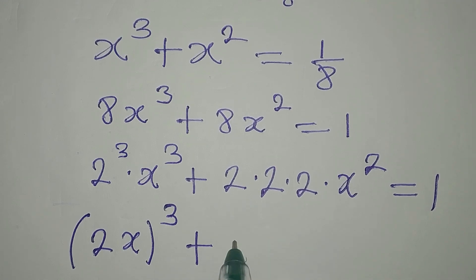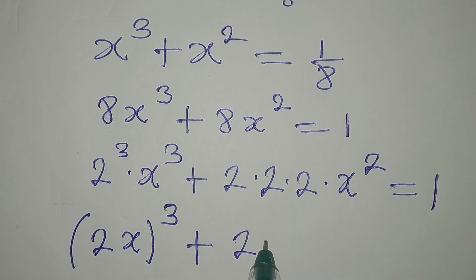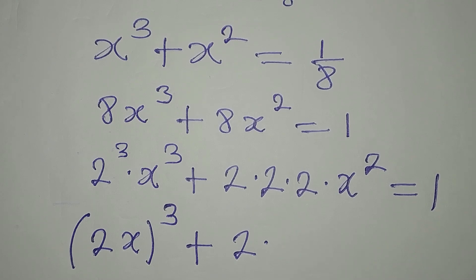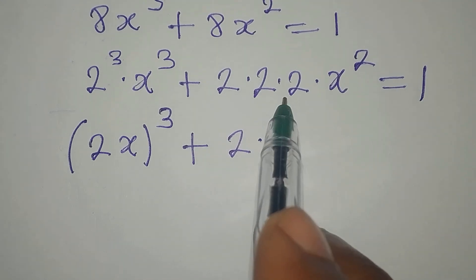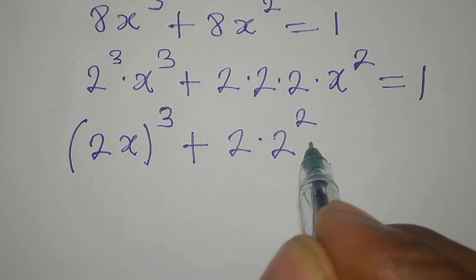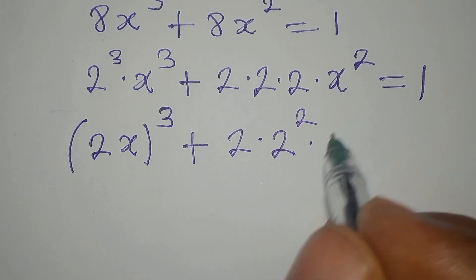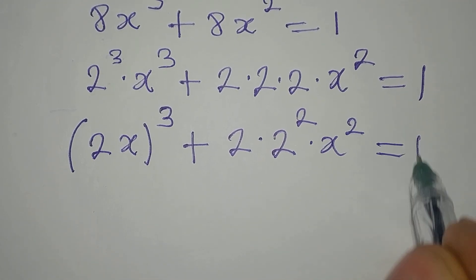I want to pick these two. We are going to have 2 times 2, which is 2 squared. I'll write 2 squared here, multiplied by x squared. Remember, this is still equal to 1.